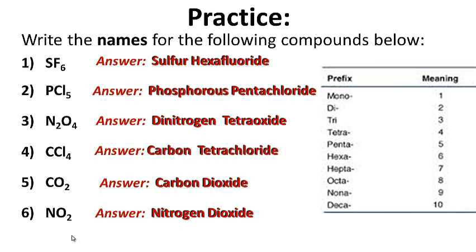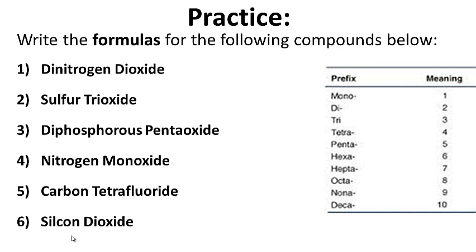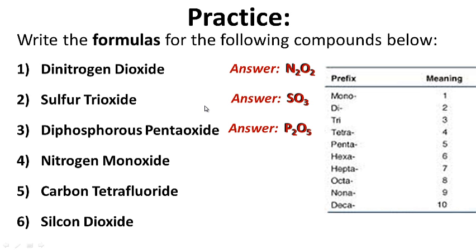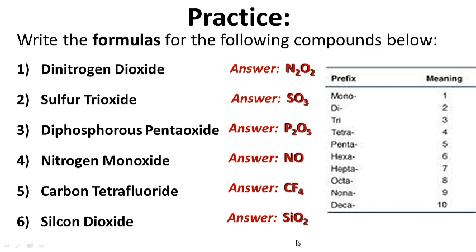Now write the formulas for the following compounds. The answers are: dinitrogen dioxide is N2O2; sulfur trioxide is SO3; diphosphorus pentoxide is P2O5; nitrogen monoxide is NO; carbon tetrafluoride is CF4; and silicon dioxide is SiO2.